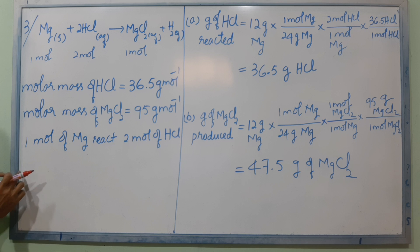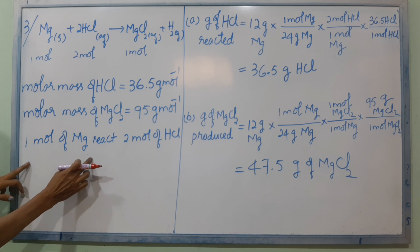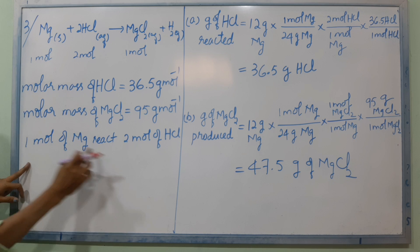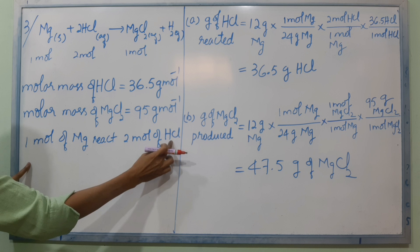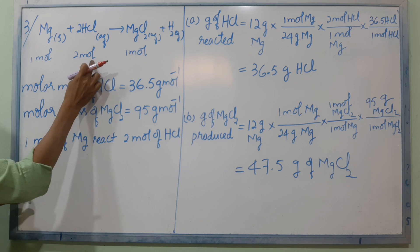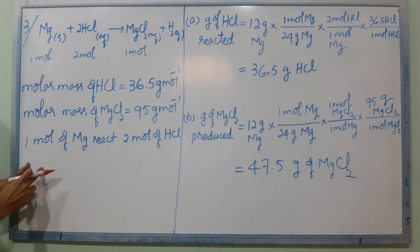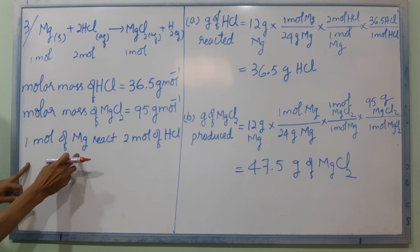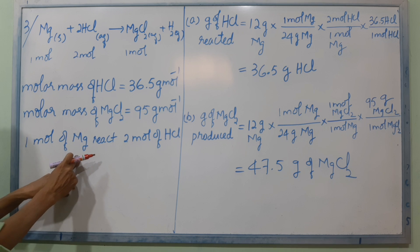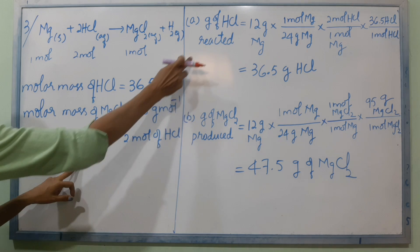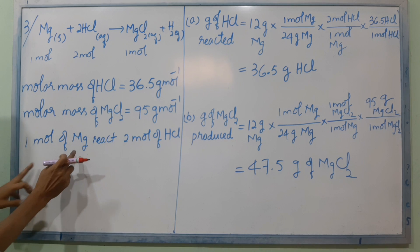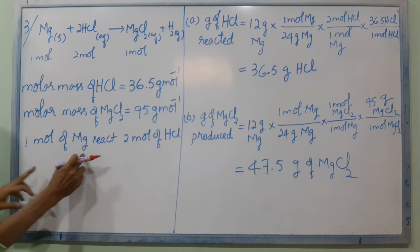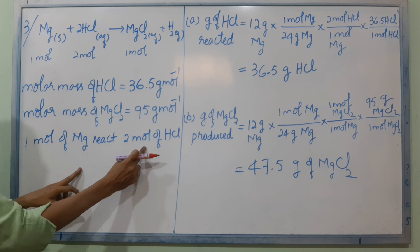According to the equation, 1 mole of Mg reacts with 2 moles of HCl.